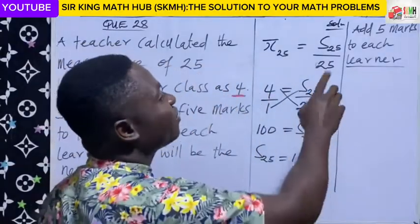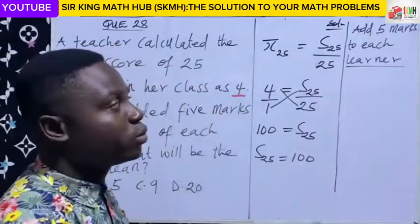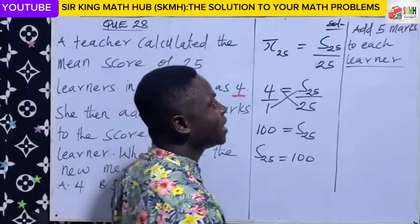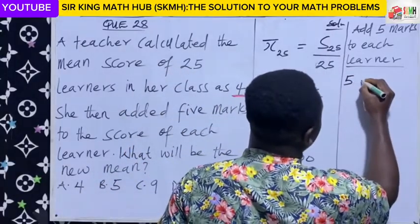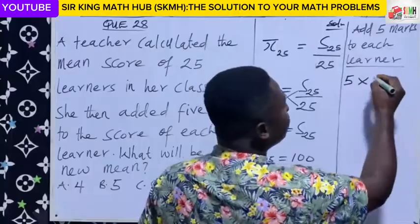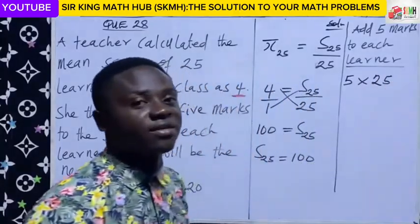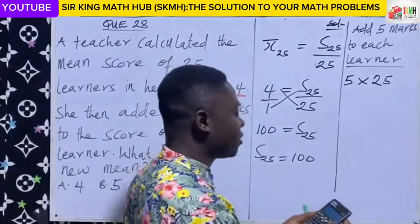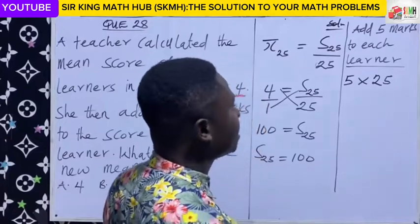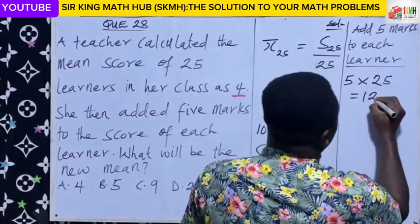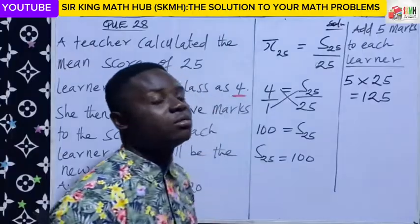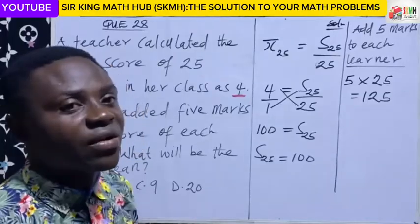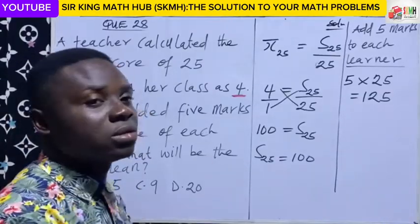So, adding five marks to each learner — we also know that we have twenty-five learners. The total marks added will be five marks times twenty-five learners. Five times twenty-five is one hundred and twenty-five. So the teacher has added one hundred and twenty-five to their total scores.